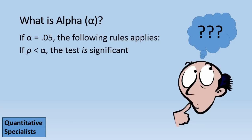If p or SIG, as you saw in our output, is less than alpha, or less than .05 in this case, the test is significant. Whereas if p or SIG is greater than .05, the test is not significant.